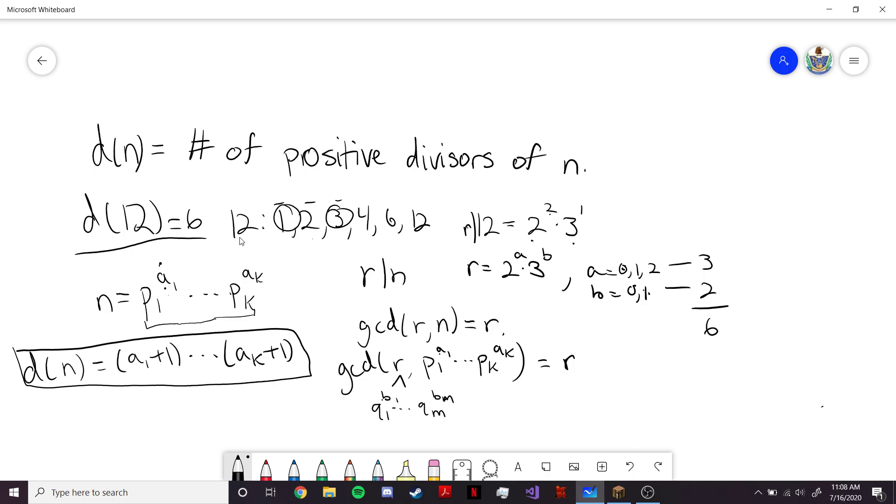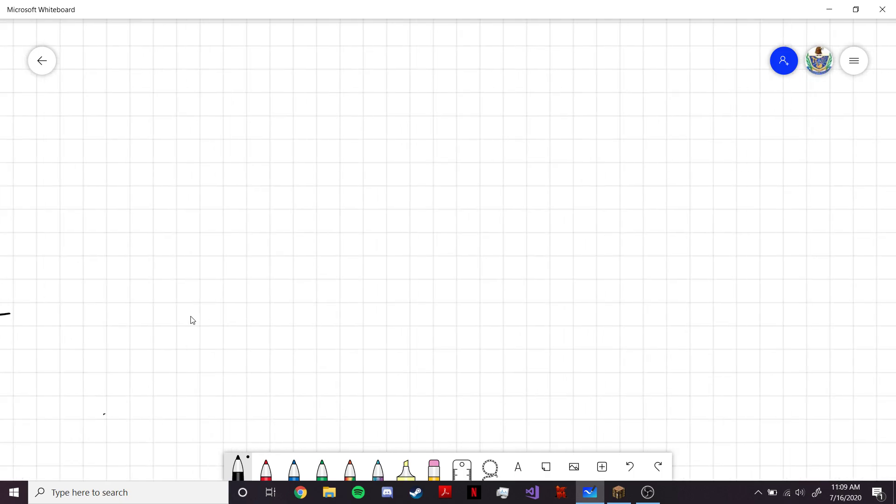And I'm not going to show it here, but you can use this idea to show that d(n) will be multiplicative. Because if two numbers are coprime, then their primes will be distinct. And so, when you multiply them together, essentially, the factors in d(n) that correspond to each exponent of a prime, those won't overlap.